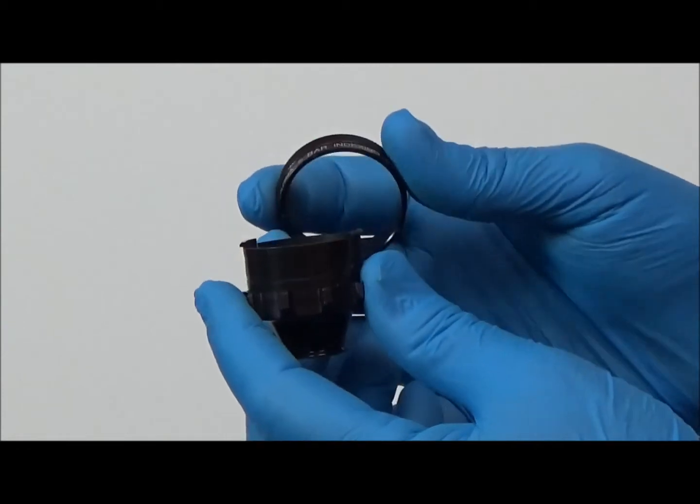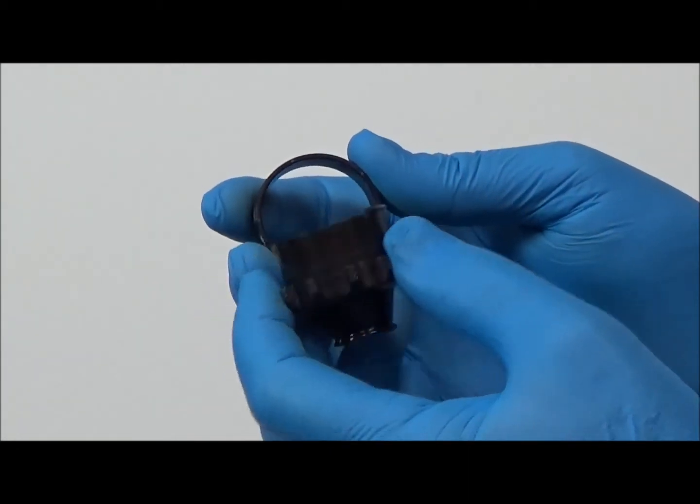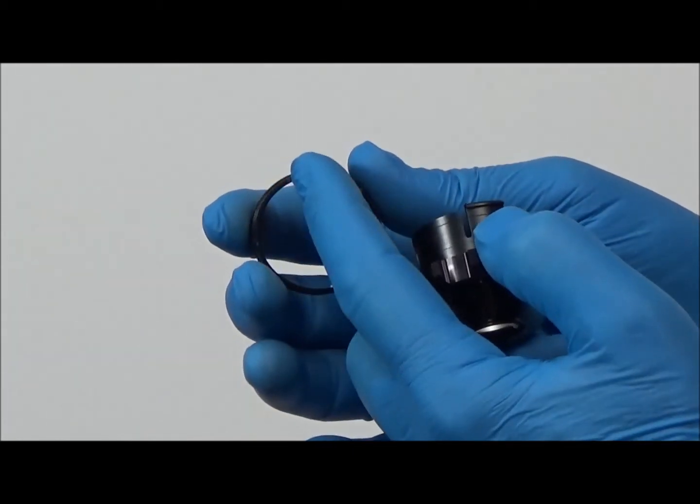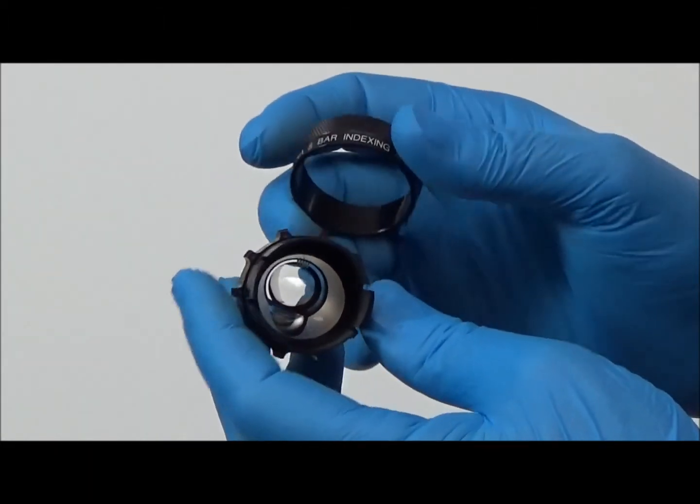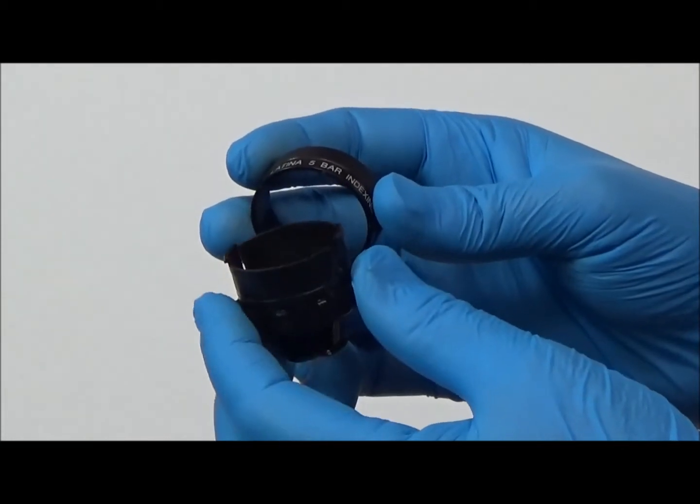With the rim removed, the indexing magnets can easily be seen. The number and position of the magnets define the rotational indexing stops, or clicks, that can be felt when rotating the lens.